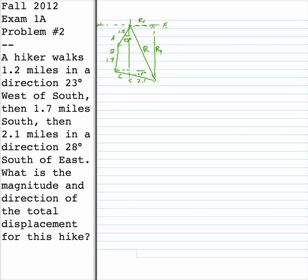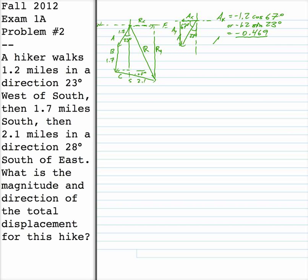Vector A is 1.2 miles in a direction 23 degrees west of south. I like to measure all angles with respect to the horizontal axis whenever possible, splitting the triangle into Ax and Ay. So Ax, which points in the negative direction, is minus 1.2 cosine 67 — or equivalently minus 1.2 sine 23 — which equals negative 0.469. The y-component also points in the negative direction: negative 1.2 sine 67, or negative 1.2 cosine 23, which equals minus 1.105.